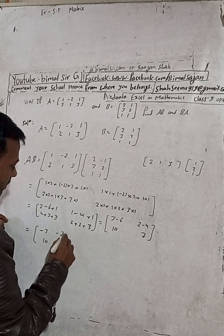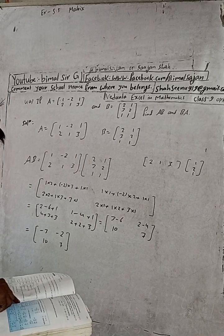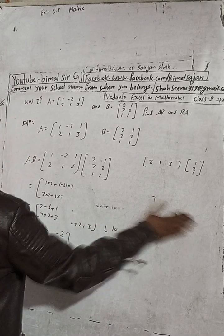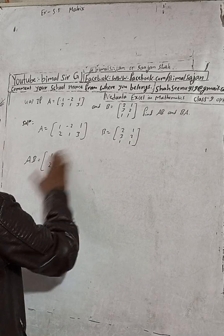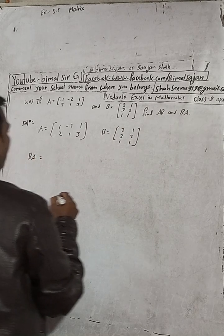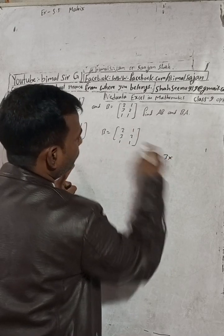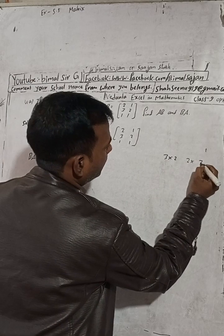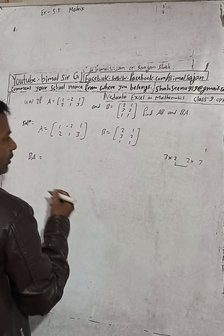Therefore AB equals the 2×2 matrix: [-3, -2; 10, 7]. That's our answer for AB, question 4a. Now I will find BA. For BA, B has order 3×2 and A has order 2×3, so the middle values are equal — BA is also defined and the result will be a 3×3 matrix.